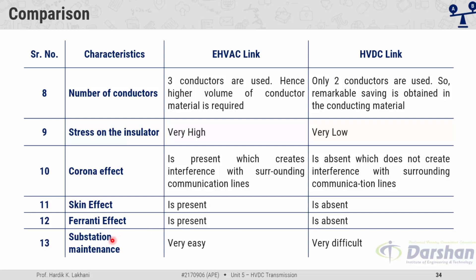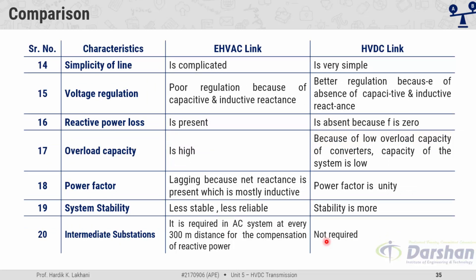Substation maintenance is very easy in EHV AC links but very difficult in HVDC because the substation is made up of converter valves. The AC line is somewhat more complicated whereas the DC line is very simple. Voltage regulation is poor in AC due to capacitive and inductive reactances, but better in DC since those reactances are absent. Reactive power loss is present in AC, whereas in DC reactive power is absent because there is no frequency. The overload capacity of AC systems is very high, but for DC systems it is limited by converter ratings.